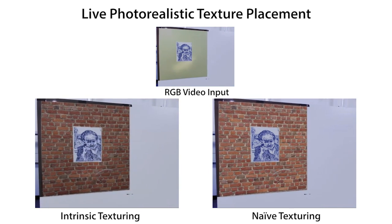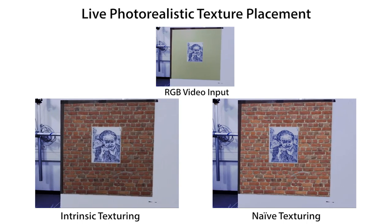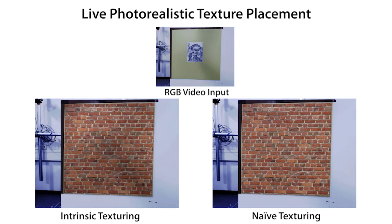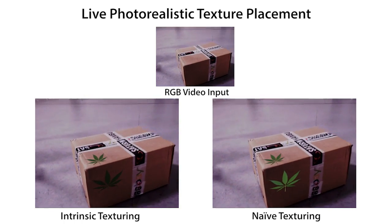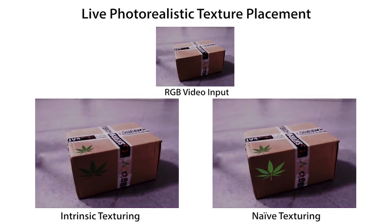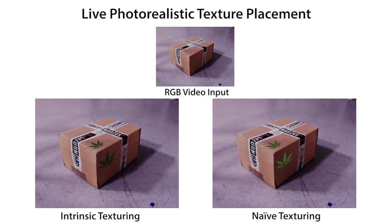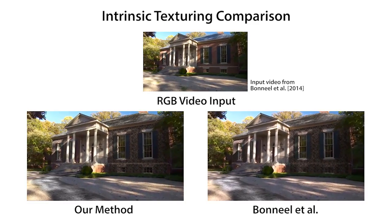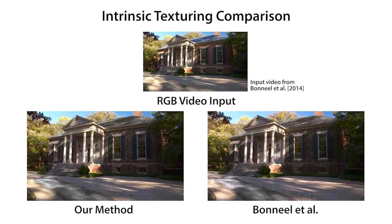We can also retexture whole areas, for example as a brick wall. Using intrinsic texturing, shadows appear realistic. We can also replace the existing texture. We paint a leaf decal on the box. Note the different shading of the leaves depending on which side of the box they are on. We also perform a comparison with the offline intrinsic texturing approach by Bonnell and colleagues on the house sequence, and obtain comparable results.